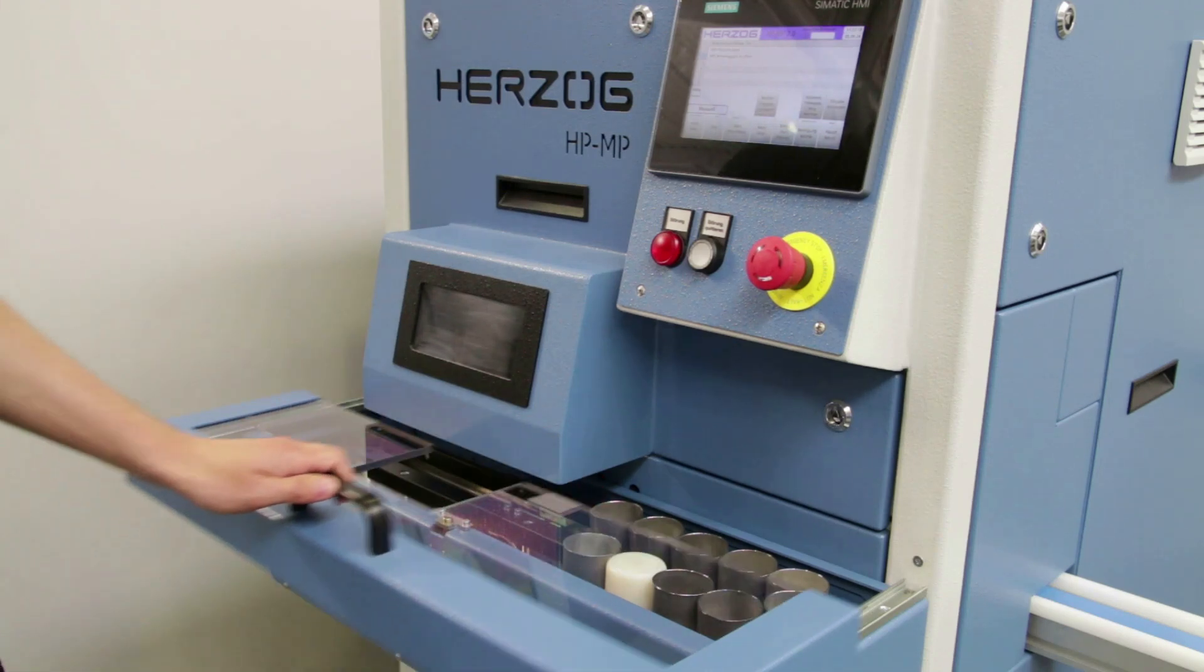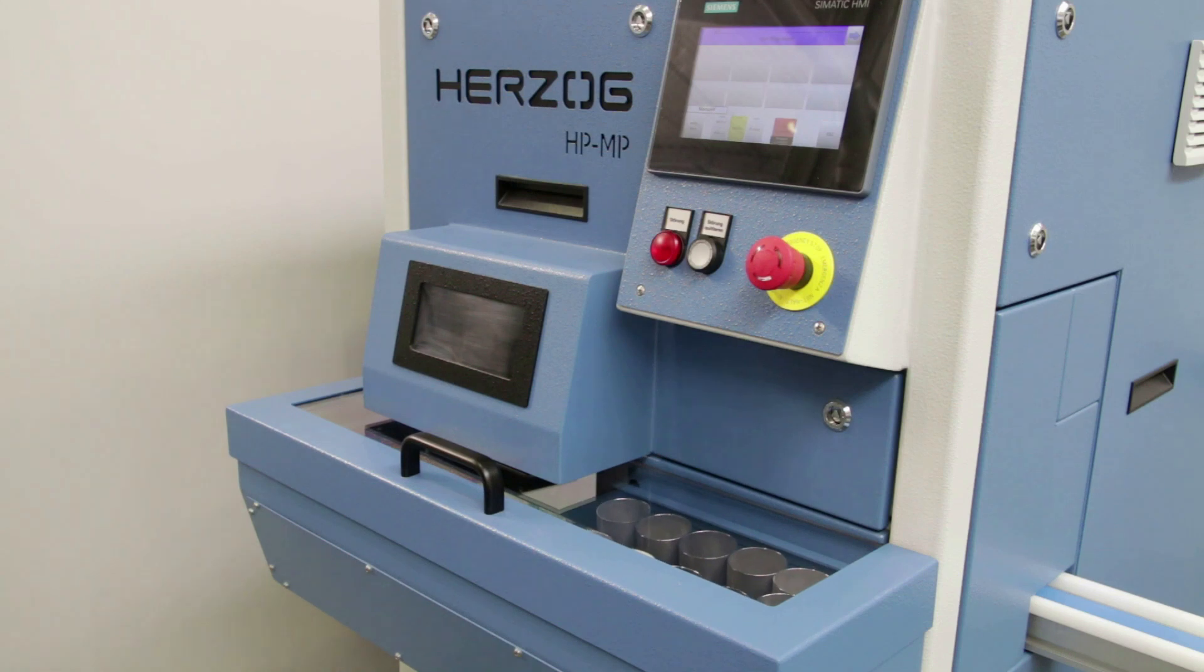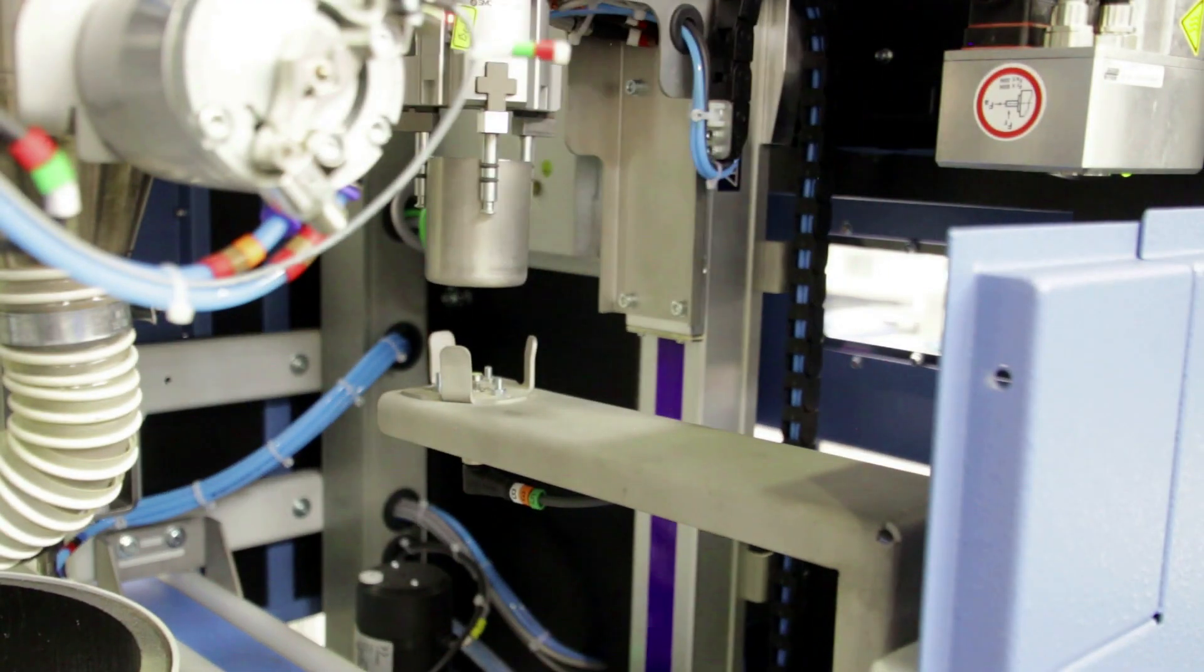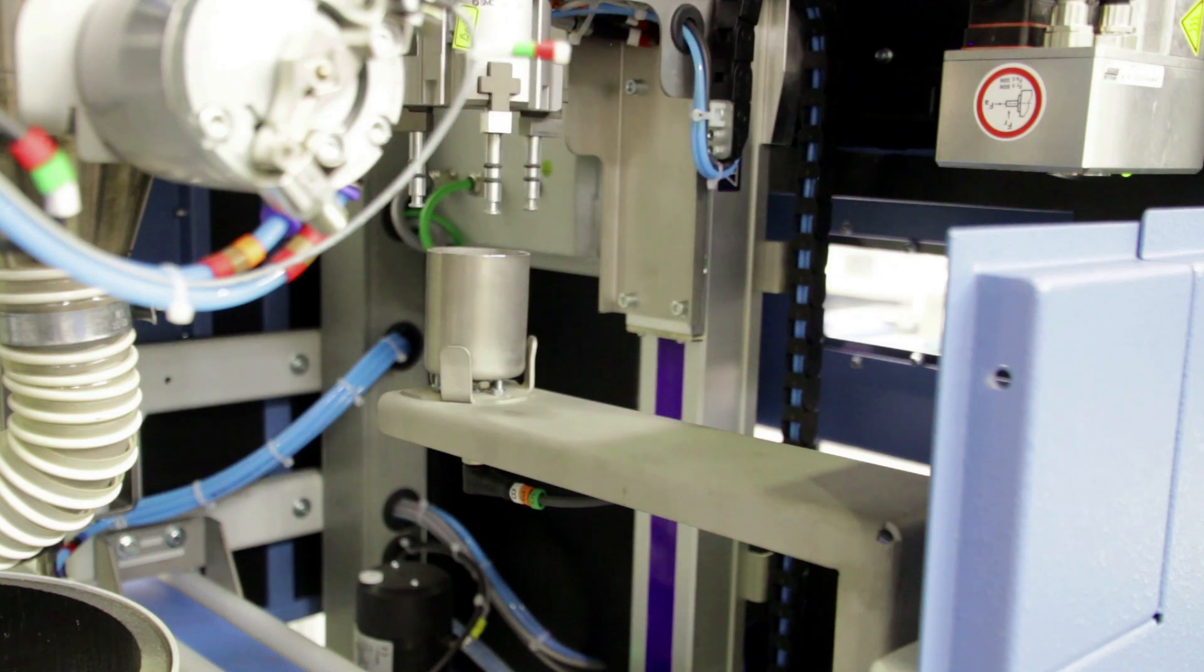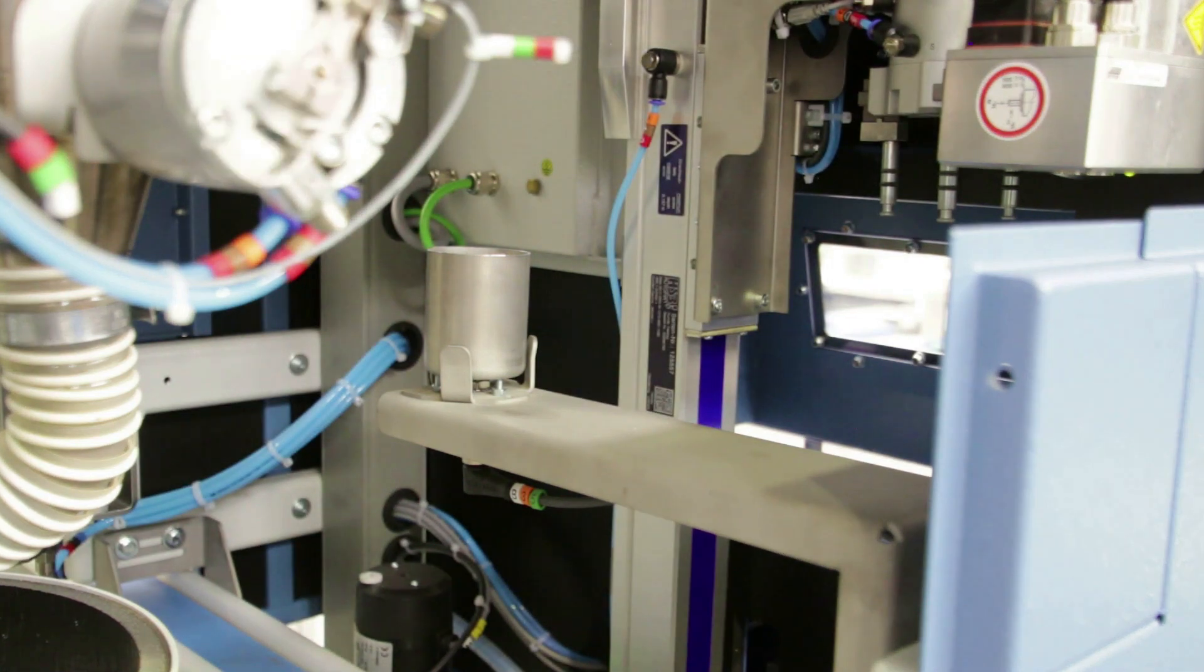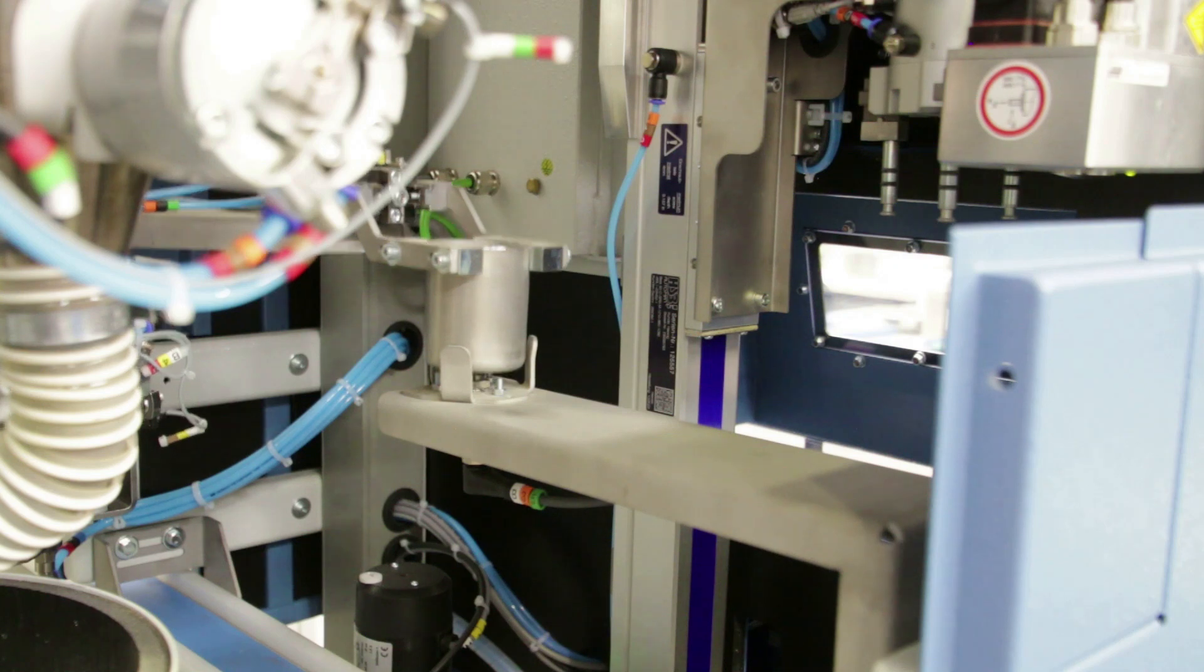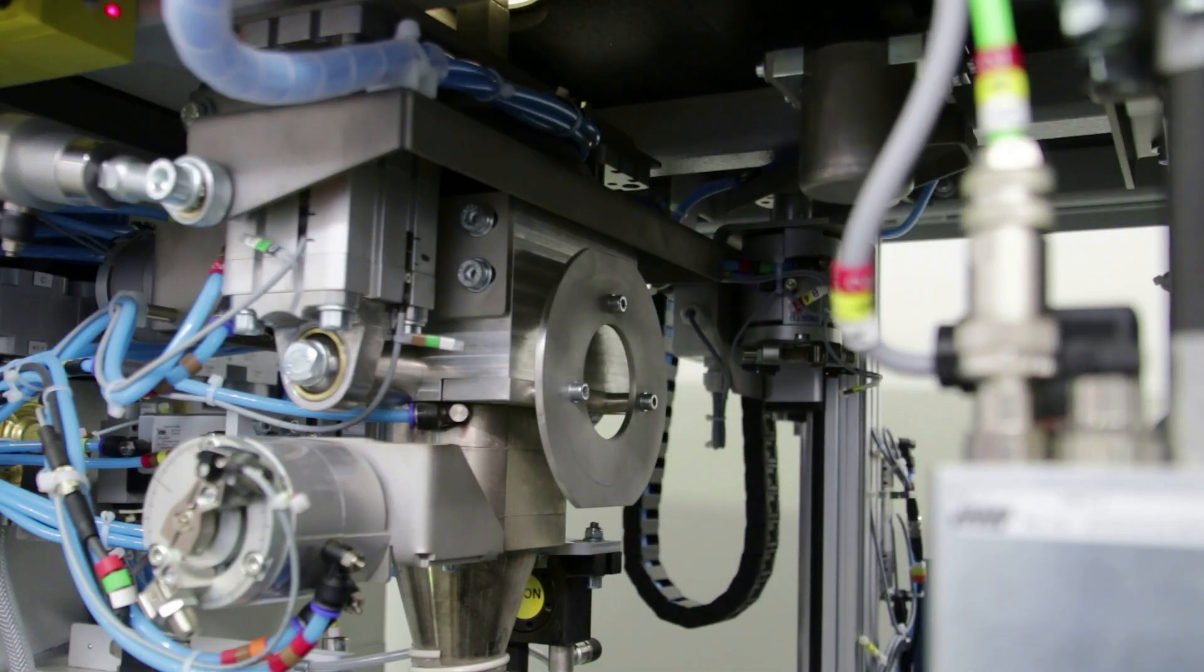Herzog introduces the latest and enhanced version of the HPMP combined mill and press. Designed specifically for laboratories in cement production and other primary industries, the HPMP is the ultimate solution for producing high-quality pressed pellets. With a focus on efficiency and user-friendly maintenance, all processes within the machine have been optimized.